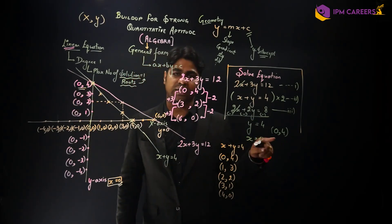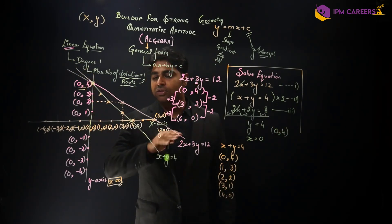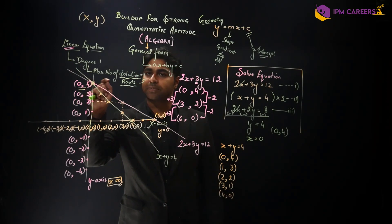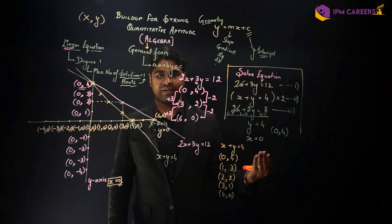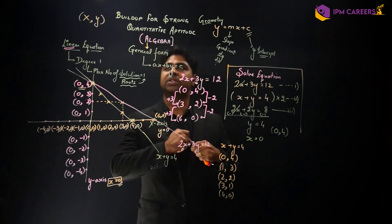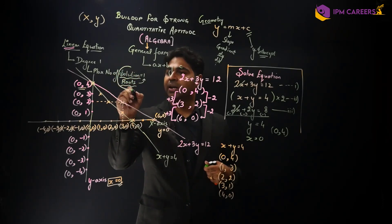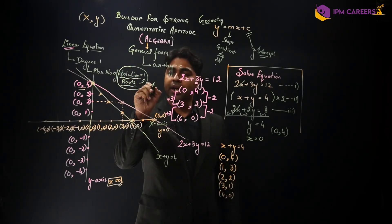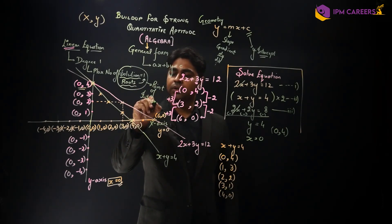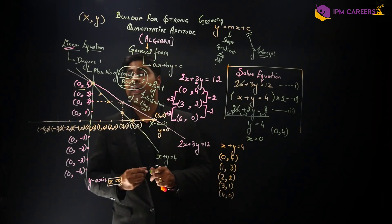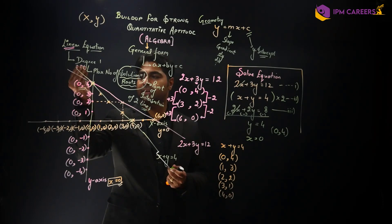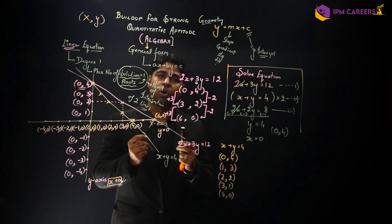So the two lines intersect each other at the point (0, 4). The meaning of the solution you have been computing since childhood — what 'roots' mean, what 'solution' means — is this: it is the point of intersection of two lines. These two lines intersect each other at this particular point. That is what your solution or roots of the equation represent.